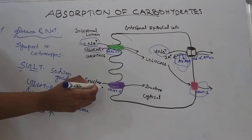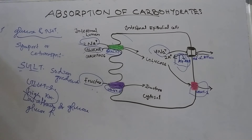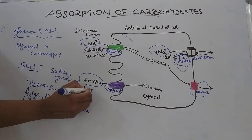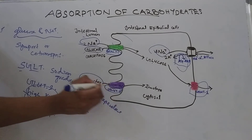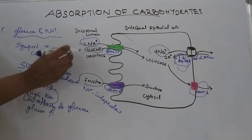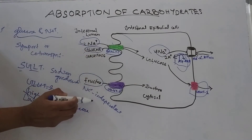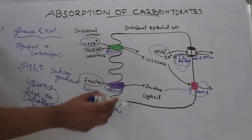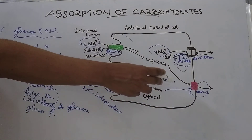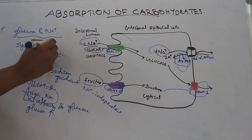On the luminal side, there is another transporter known as GLUT5. GLUT5 is a fructose transporter and it is sodium independent, unlike SGLT1 which is sodium dependent. Fructose and all absorbed monosaccharides are transported through GLUT2 into the portal circulation.